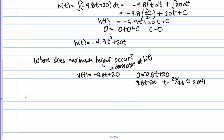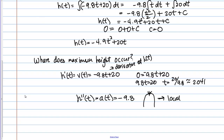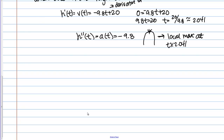Let's verify that this critical point is indeed a maximum using the second derivative test. The second derivative is the acceleration, which is negative 9.8 — a negative value. That tells us the function is always concave down, so the critical point must be a local maximum. Since it's the only critical point, the ball definitely reaches its highest point at approximately 2 seconds.